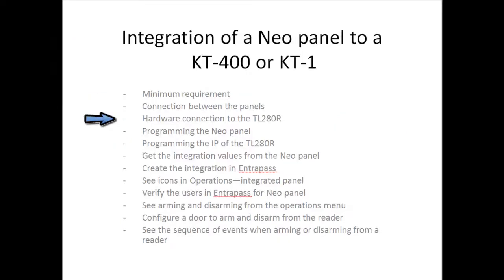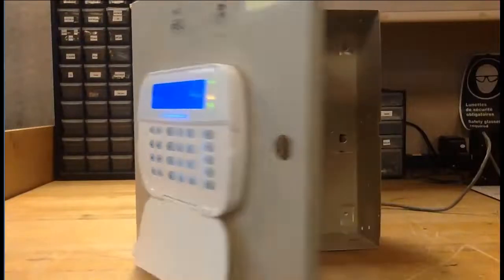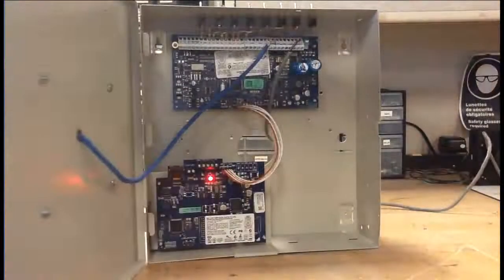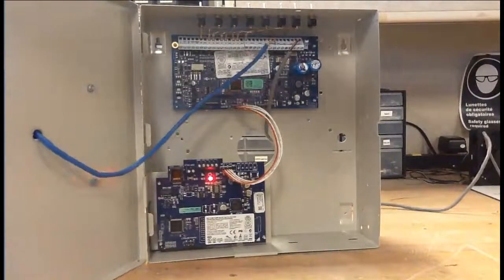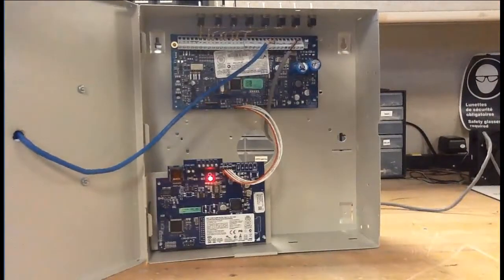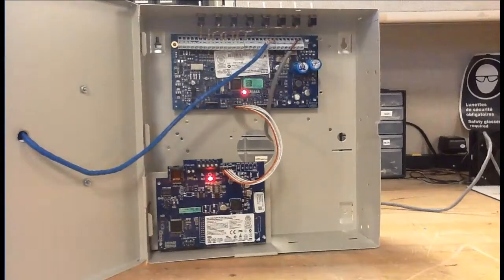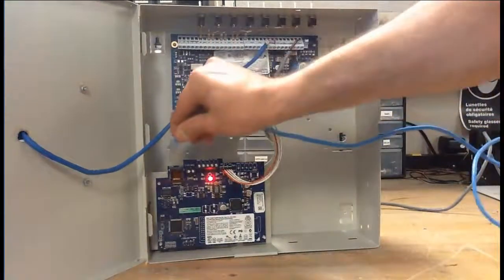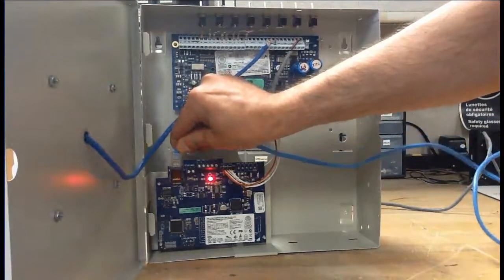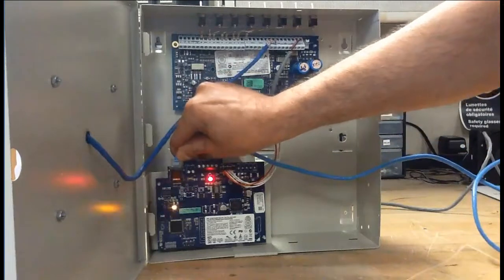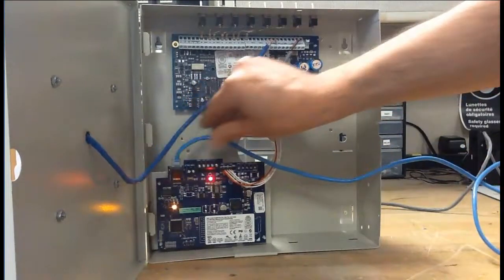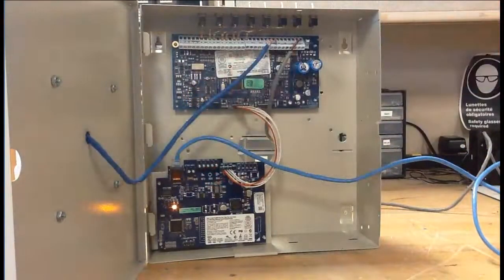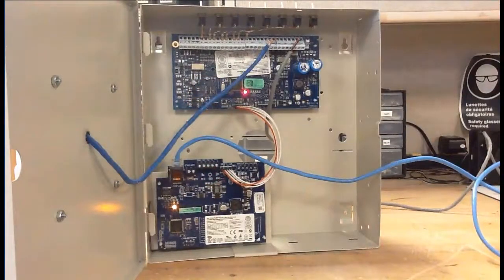Next is the hardware connection to the TL280. We will open up the cabinet. You can see the panel at the top and the TL280 at the bottom. We just connect the Ethernet wire, and then you can see the LED starts reacting as soon as we do so.